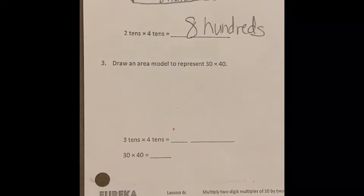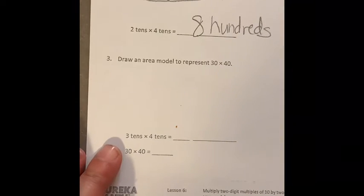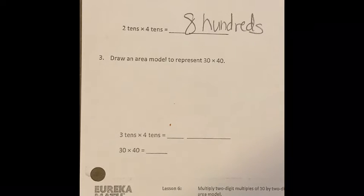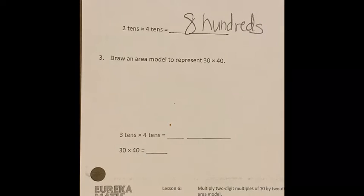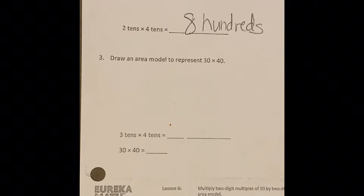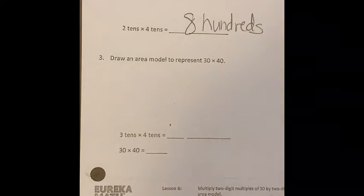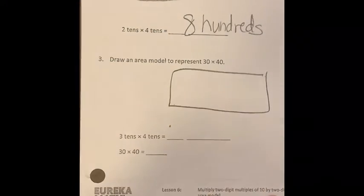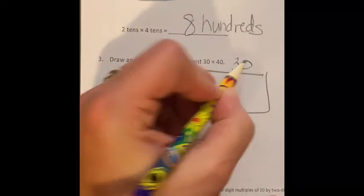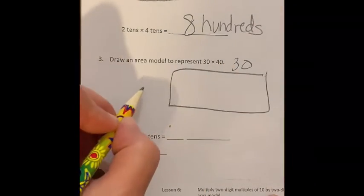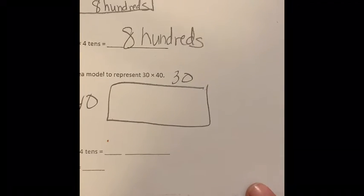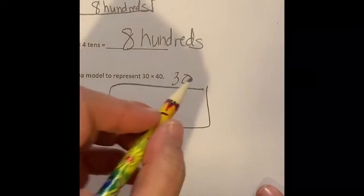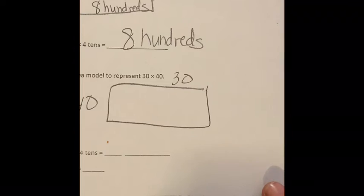Let's go down here. Draw an area model to represent 30 times 40. I'm going to set you up with the area model. It's going to look pretty similar to what I already did here. I'm going to draw my box. On the top, I'm going to put 30. On the side, I'm going to put 40.